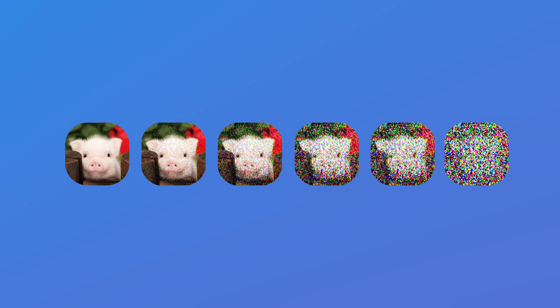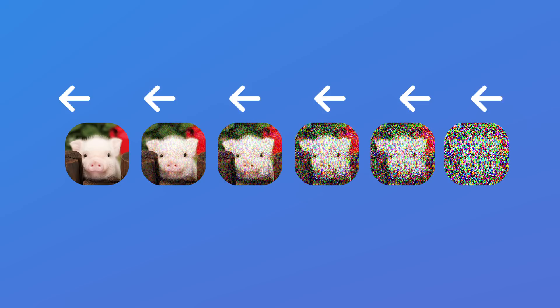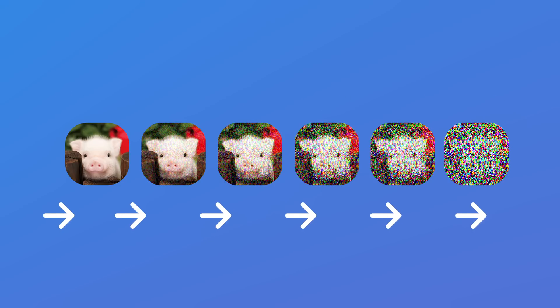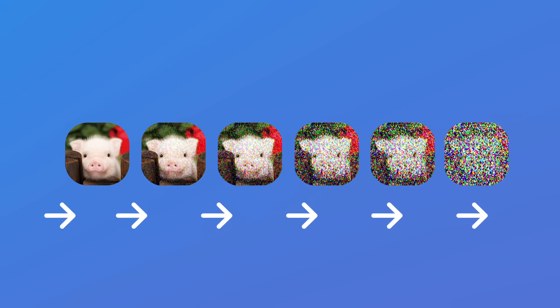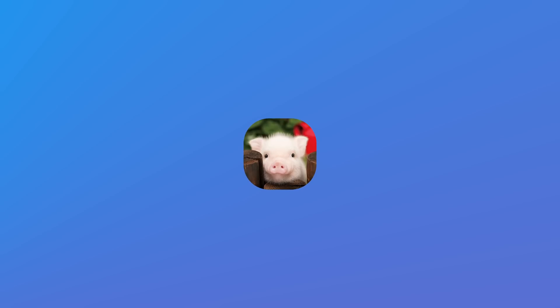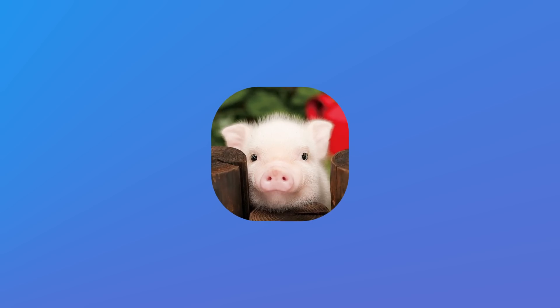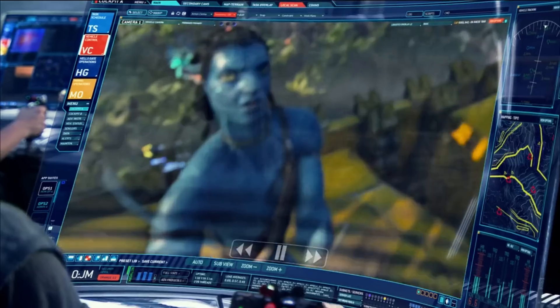Step three: show the noisy images to an AI and teach it to clean the noise — basically teach a machine learning algorithm how to remove the noise step-by-step to clean the image. Step four: generate noise that matches the mathematical representation of the image matching the prompts. Step five: clean up the noise, getting a small but clean image. Step six: upscale the image — kind of like you know how the FBI shows 'enhance' in movies? It's kind of like that. Scale up. Enhance.